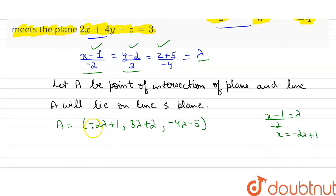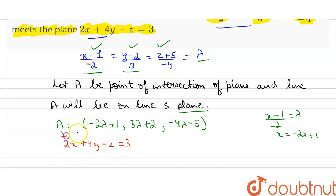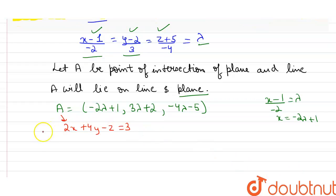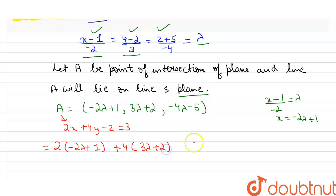Since point A also lies on the plane, it will satisfy the equation of the plane: 2x + 4y - z = 3. So we put the corresponding values of x, y, z into the equation of the plane. We get: 2(-2λ + 1) + 4(3λ + 2) - (-4λ - 5) = 3.